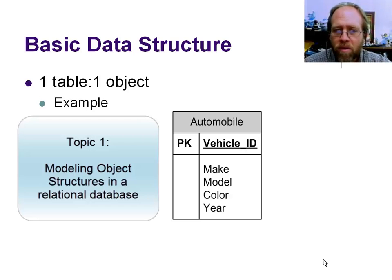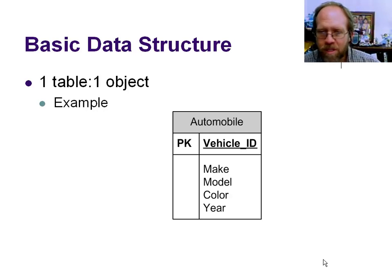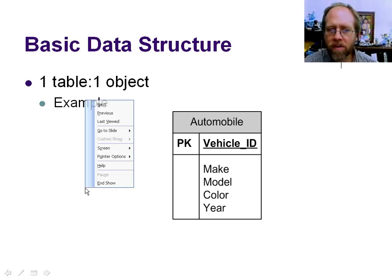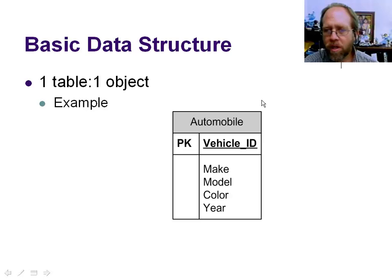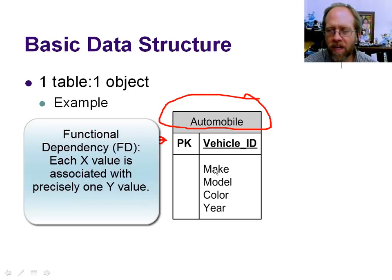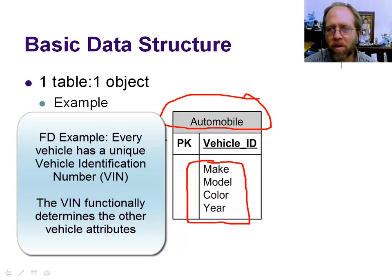The basic concept of a data structure is that a table encapsulates an object. The relationship between object-oriented programming objects and database tables is one-to-one. So let's take an example of a vehicle. We're going to make a table called automobile with a primary key — a numeric field called vehicle ID — and then information about that vehicle like make, model, color, and year about any individual automobile will be part of that table.